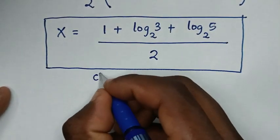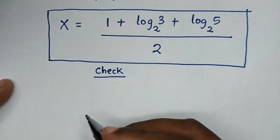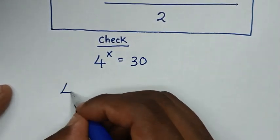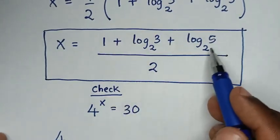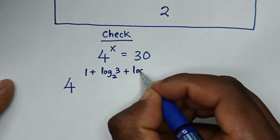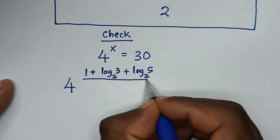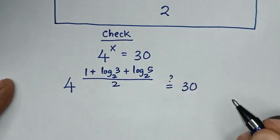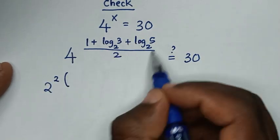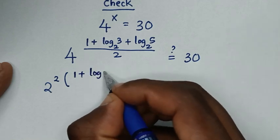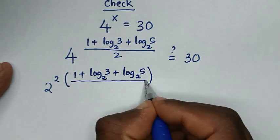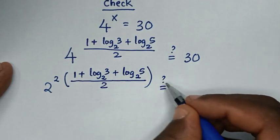Now let's check if this answer is correct. From our problem, 4 to the power x equals 30. We substitute our answer for x, which is (1 + log₂3 + log₂5)/2. So it becomes 4 to the power of (1 + log of 3 base 2 plus log of 5 base 2) over 2, and we ask: is this equal to 30? Since 4 is the same as 2 squared, this becomes 2 squared to the power of (1 + log₂3 + log₂5)/2.